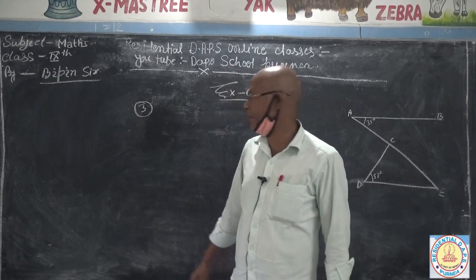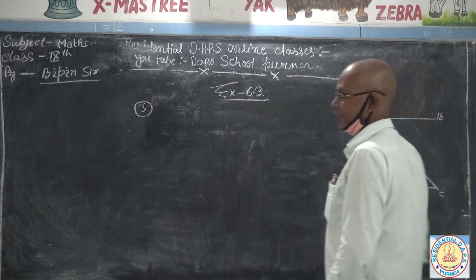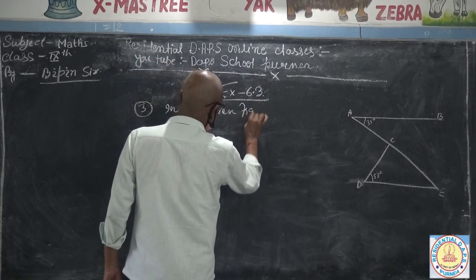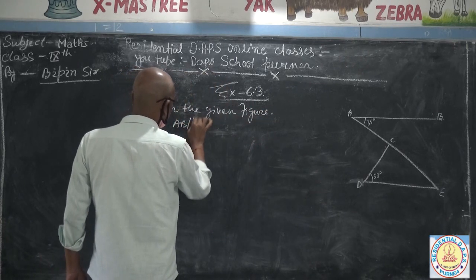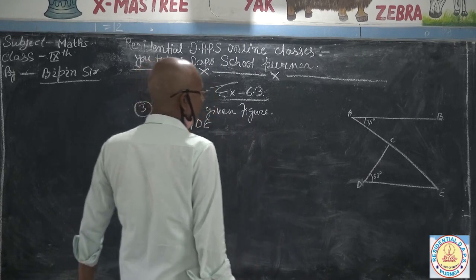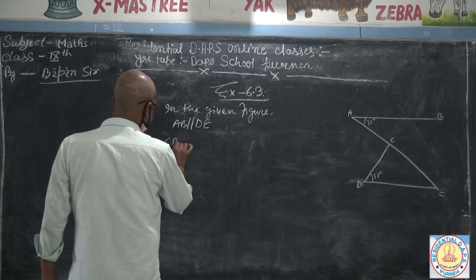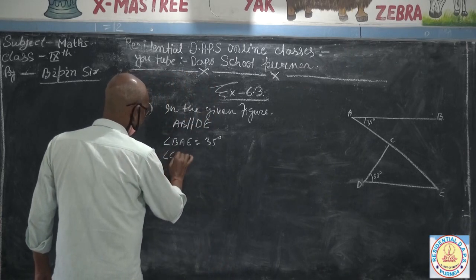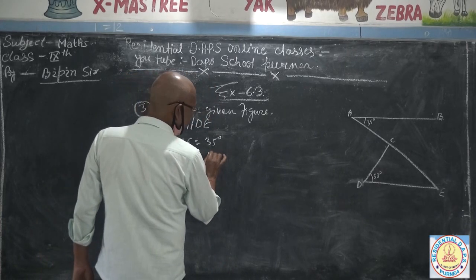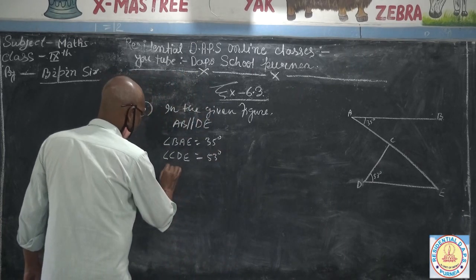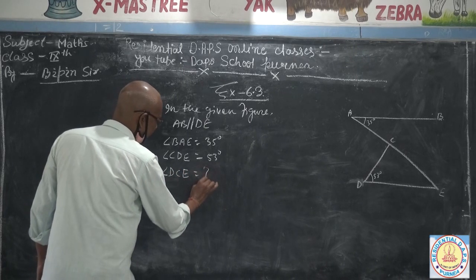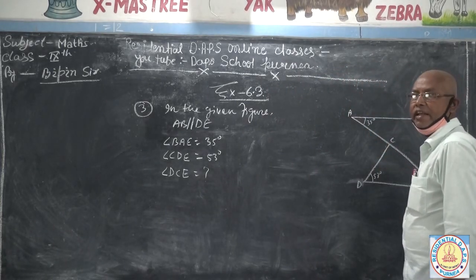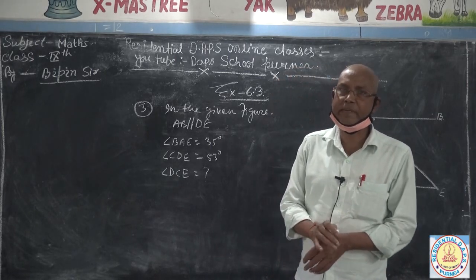Question number three. In the given figure, AB is parallel to DE. Angle BAE is given as 35 degrees and angle CDE is given as 53 degrees. Find the value of angle DCE. AB and DE are the parallel lines and AC is the transversal line. We know if two parallel lines intersect a transversal line,